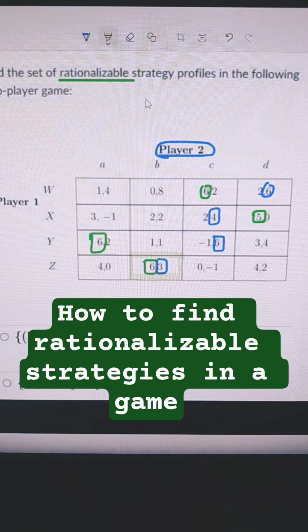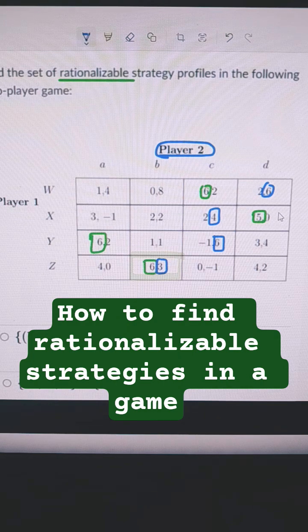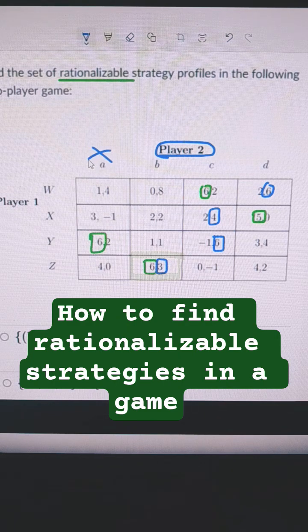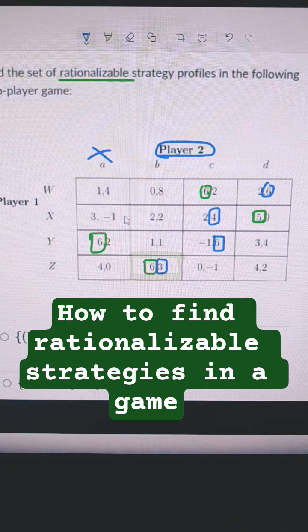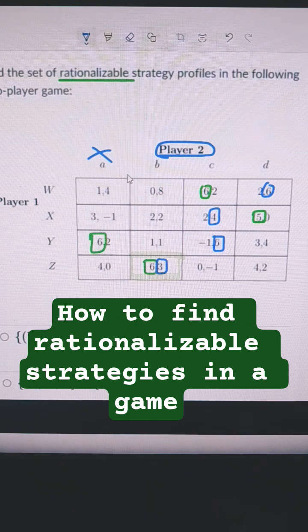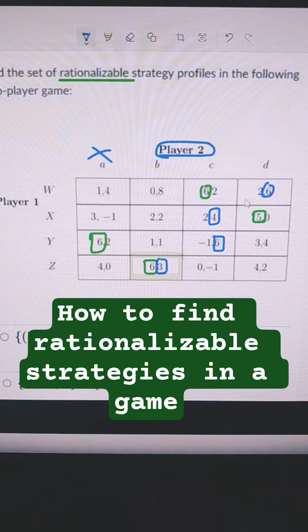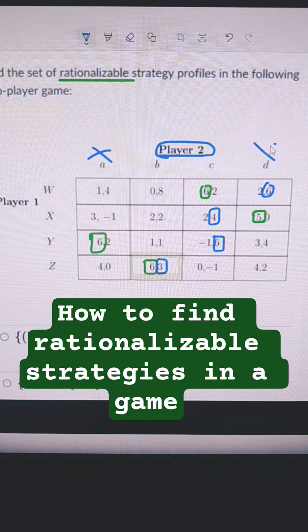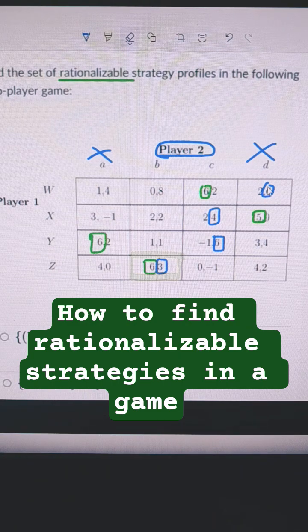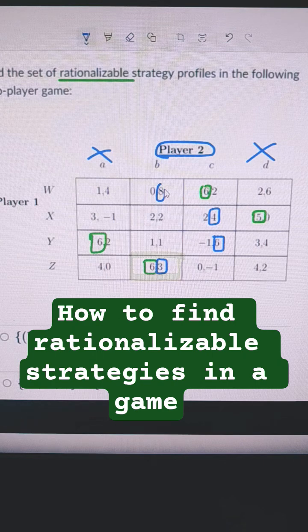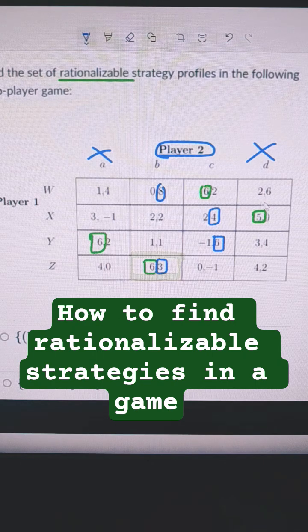Notice that player two did not choose A. So A is not rationalizable in this game. But they did... Oh, and I noticed that I made a mistake. Right here, this 8 is greater than that 6.